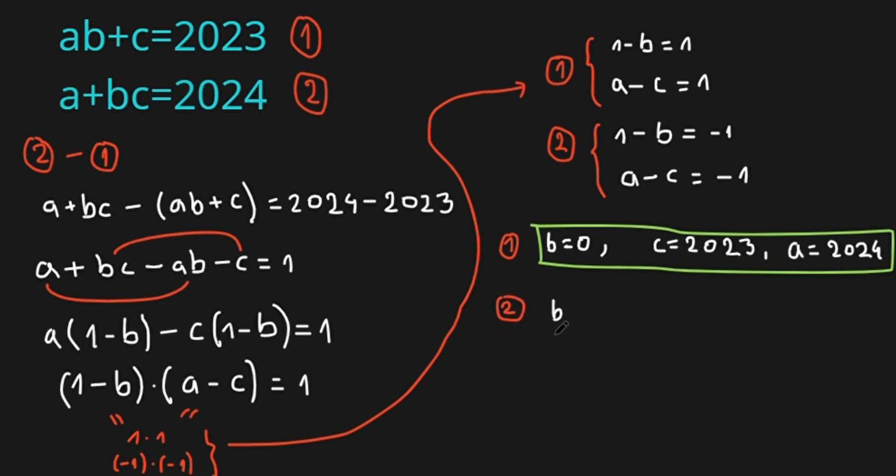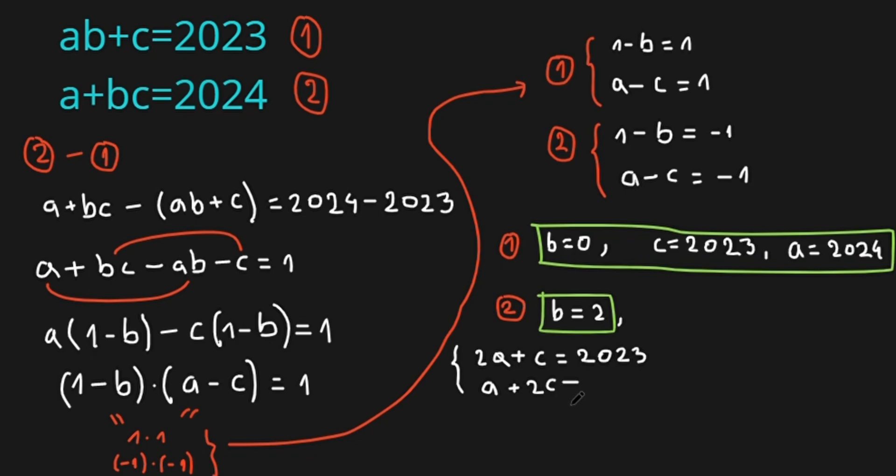And from case 2, B is 2. So we have, by replacing B, we have 2A plus C equals 2023, and A plus 2C equals 2024.